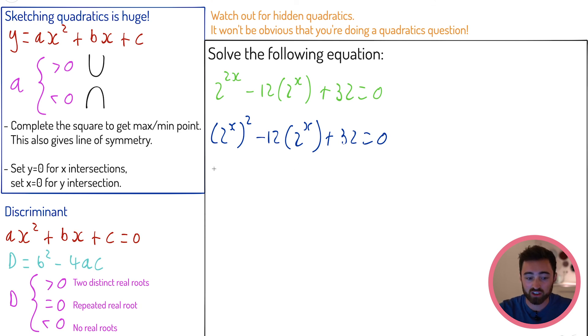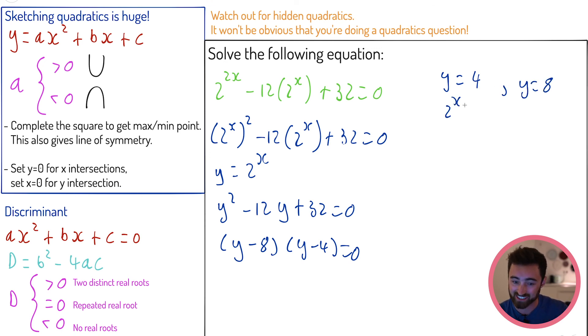So let's imagine that y was 2^x. I'm making a substitution, I'm allowed to do that. Then what would this equation look like? It would be y² - 12y + 32 = 0. That's a quadratic equation. Let's factorize it. y - 8, y - 4. Okay, so I've got two values for y. y is 4, y is 8. But remember that y is actually 2^x. So 2^x is either 4, or 2^x is 8, meaning that x is either 2, or x equals 3. That is a hidden quadratic.